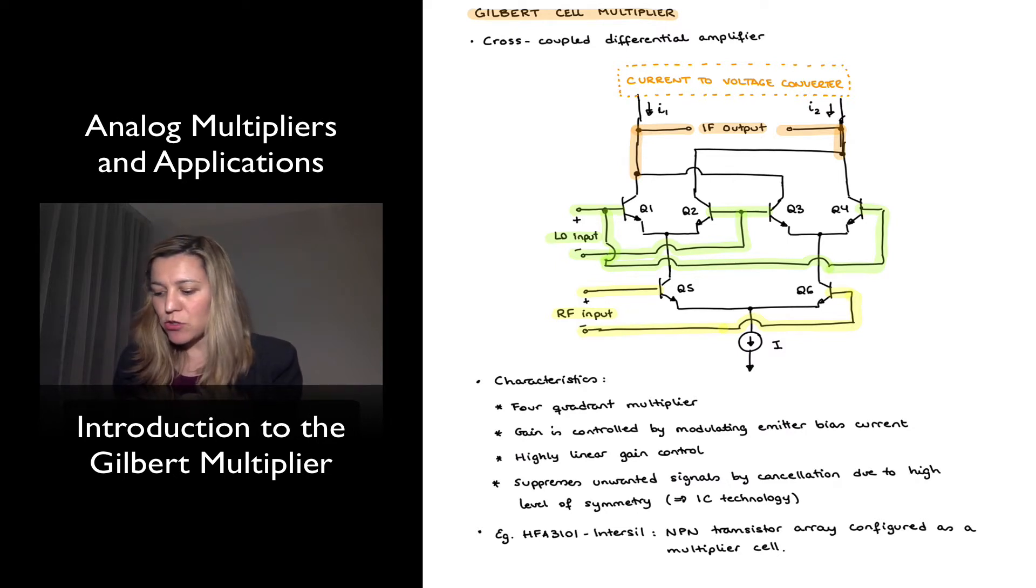We can see the two analogues to the multiplier are what I've labeled as the RF input, which provides the signal, the base to transistors Q5 and Q6. And with changes in the RF input, notice that all you're doing is steering the current, the tail current, which is labeled I, gets steered in one branch or the other.